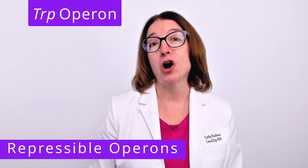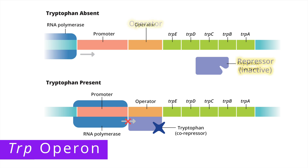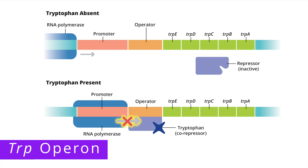Let's take a look at how the trp operon works. When levels of tryptophan are low in the environment, the cell needs to make tryptophan. When tryptophan is absent, it does not bind to the repressor, meaning the repressor is inactive and does not bind to the operator — so nothing blocks transcription of the genes in the trp operon. However, if tryptophan is present in the environment, the cell does not need to waste energy making more tryptophan. So tryptophan binds to the repressor, which then binds to the operator site and blocks transcription of the genes in the operon.